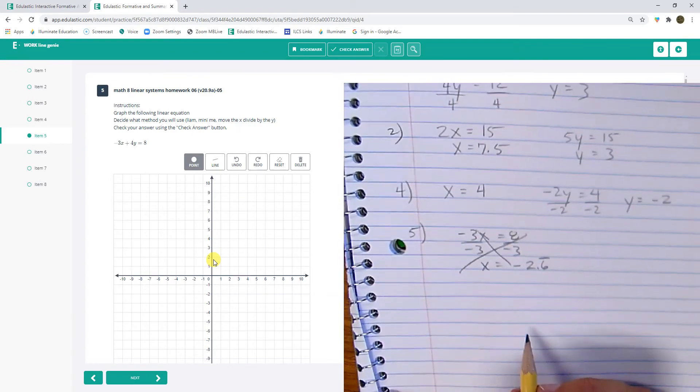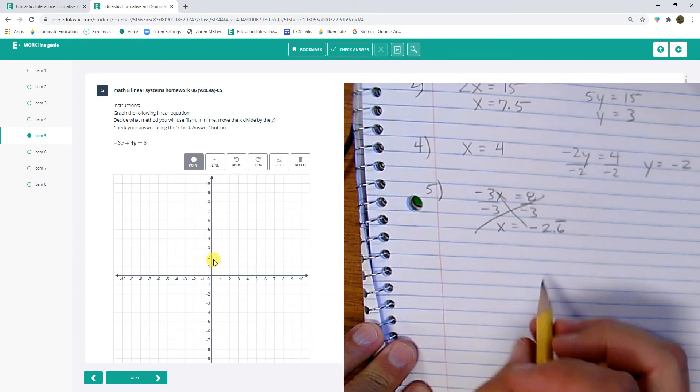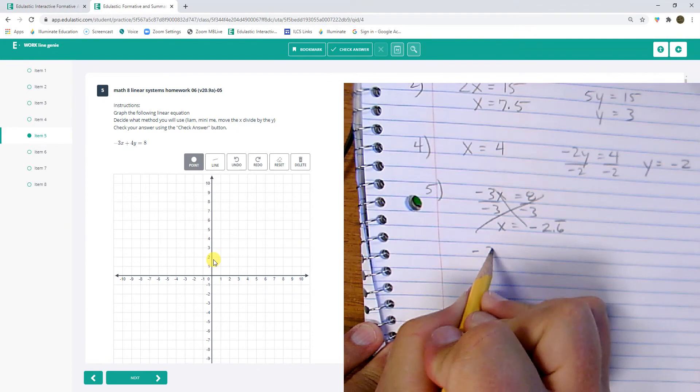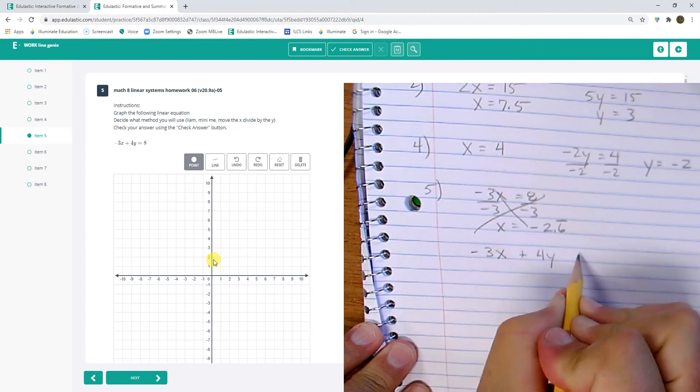So I need to do a move the x divide by the y on this one. So here we go. Move the x divide by the y. It's not hard, so give it a try. Then you have to simplify. Okay. Negative 3x plus 4y equals 8.